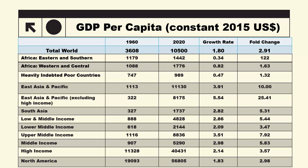Per capita GDP data from the World Development Indicators at constant prices in 2015 US dollars. I chose two years: 1960 and 2020, so we will see the performance over 60 years.